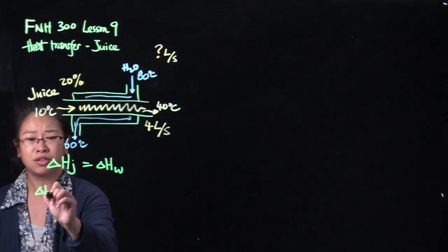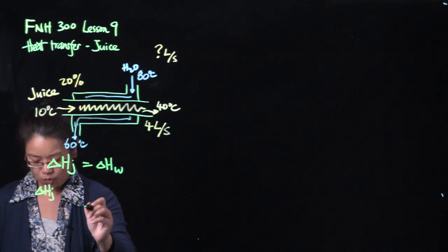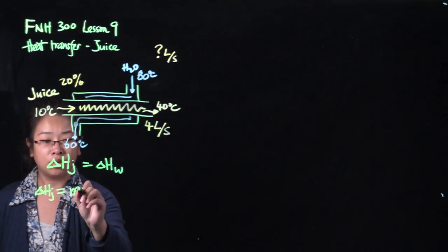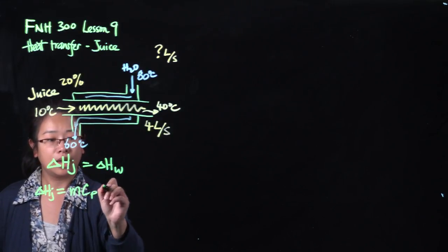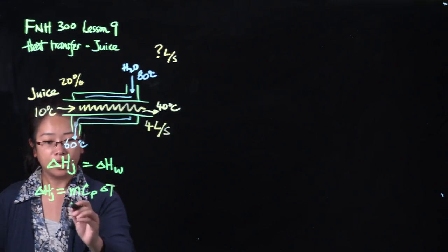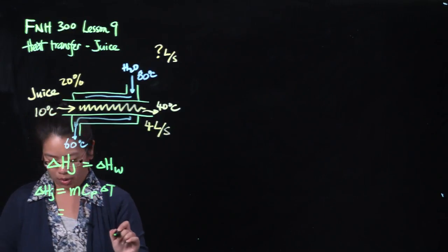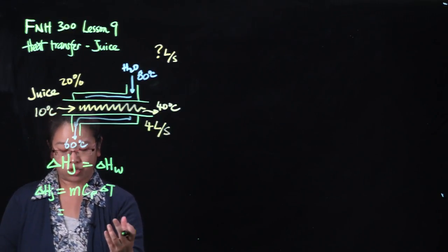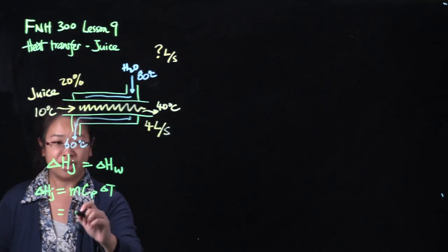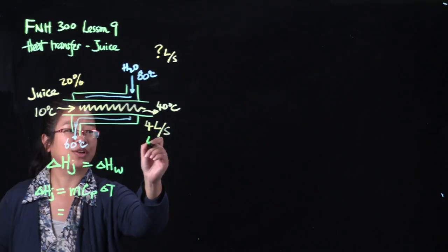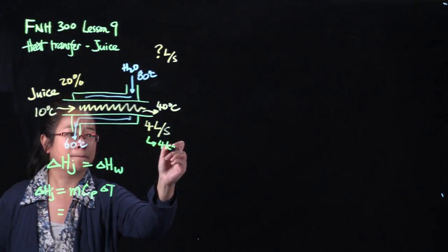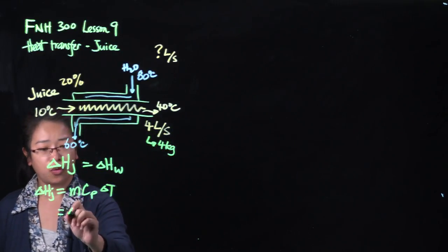So we will start with the juice first because we know everything about the juice. The equation that we need is mass, heat capacity and delta T. And for mass, let's just assume one second. So we know the mass is 4L and we will assume that 4L is also 4kg.